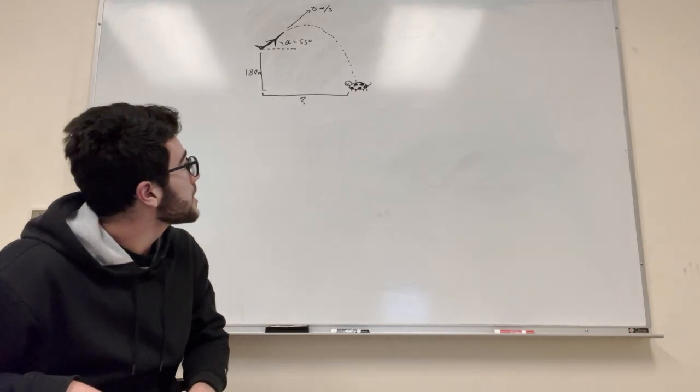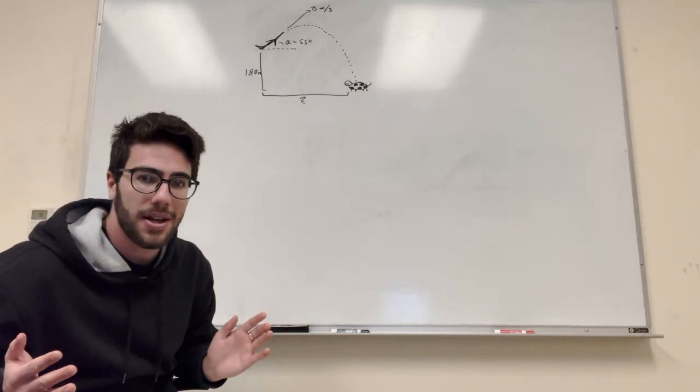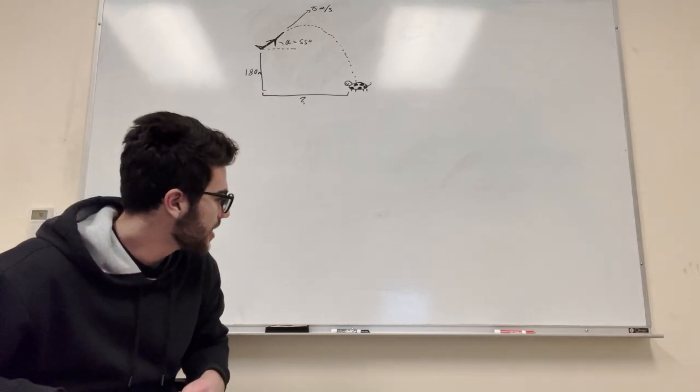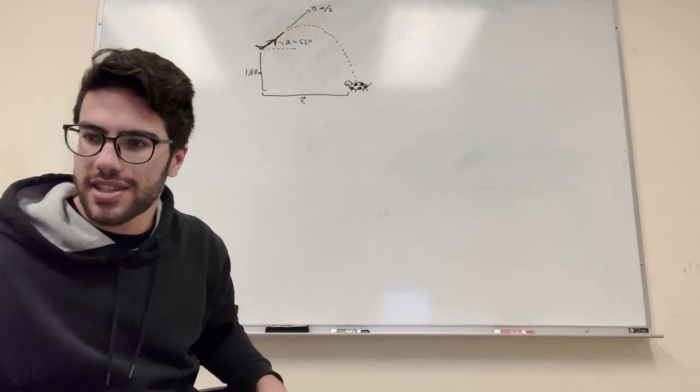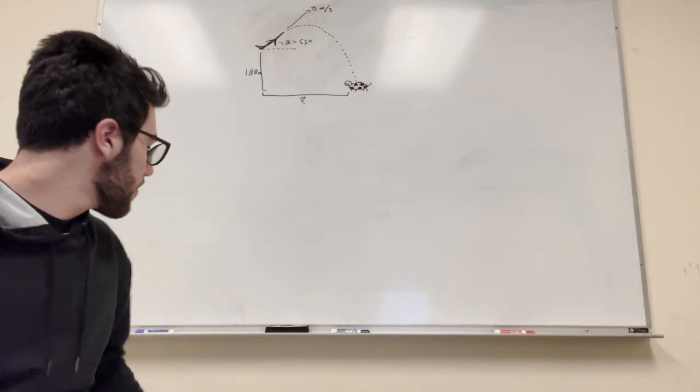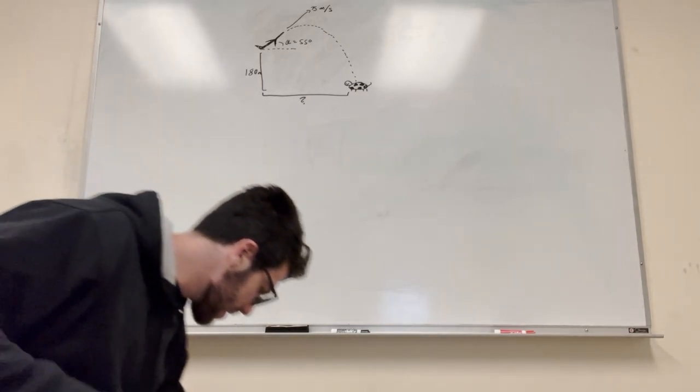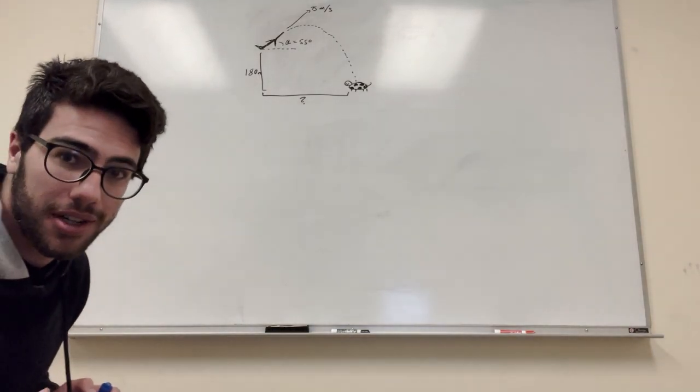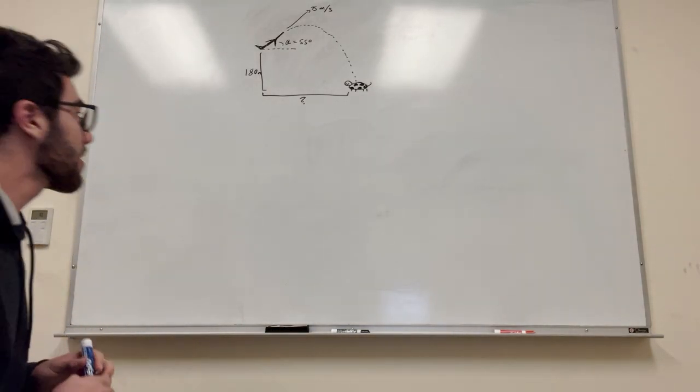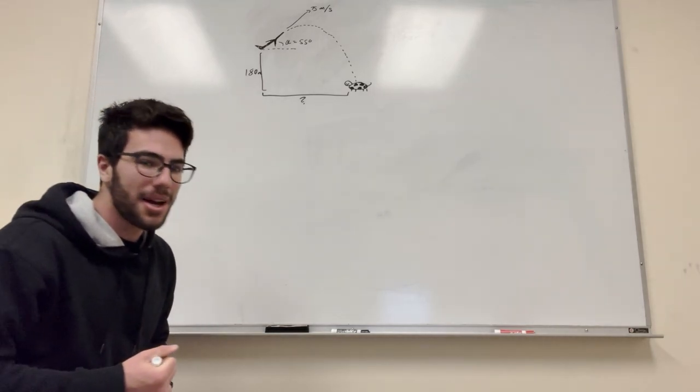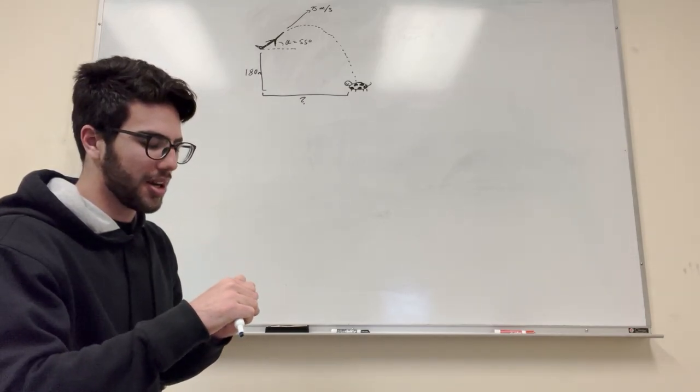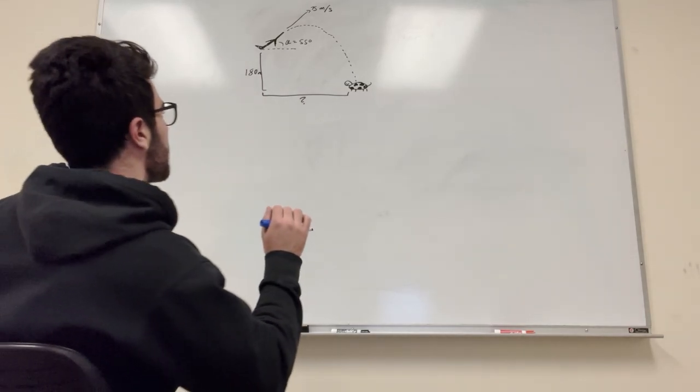And it's asking us how far away from the cow should we be in order to hit the cow directly, basically. Okay, so let's do this. This is some vectors, some cool stuff. Okay, so before we do any calculations, we're going to do some calculations. Let's do some more calculations. Alright, so let's set up a triangle for what we got going on here, because this is kind of a vector problem mixed in with a freefall problem. It's everything all at once.